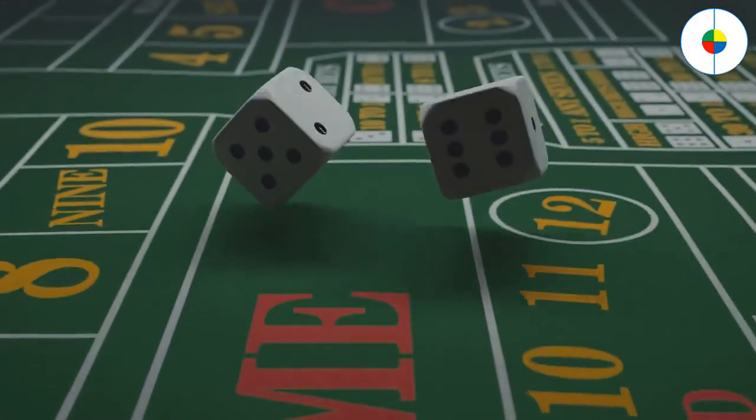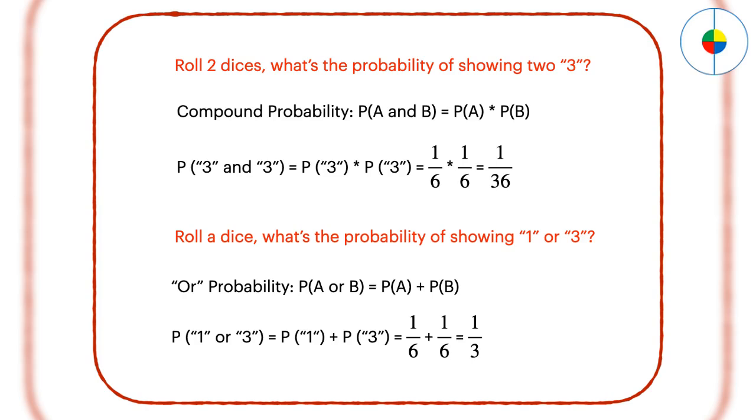How to calculate the different types of probability? To calculate the and probability, or compound probability, those events should happen independently from each other. Here is the formula. For example, if you roll a dice twice, what will be the probability of 3 and 3?